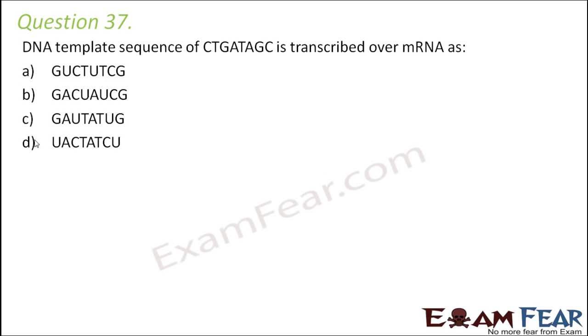Question number 37: DNA template sequence of C, T, G, A, T, A, G, C is transcribed over mRNA as its complementary strand. For C it would be G, for T it would be A, for G it would be C, for A it would be U, for T it would be A, for A it is U, G, C, C, G. Just remember the base pairing rule: A always pairs up with T and C always pairs up with G. In case of mRNA, instead of T you would have U. If you remember this, you will be able to answer these kinds of questions.